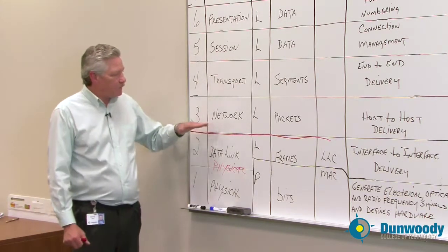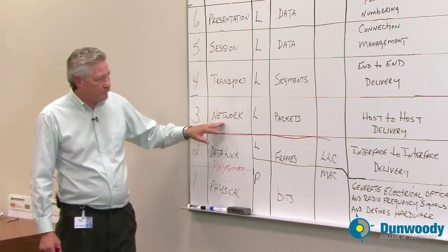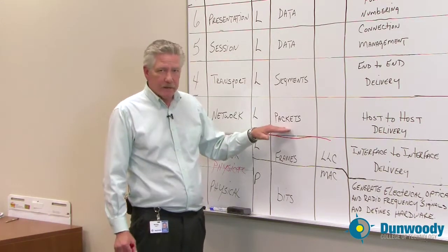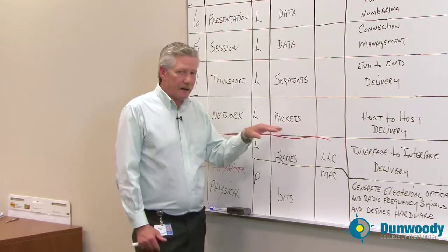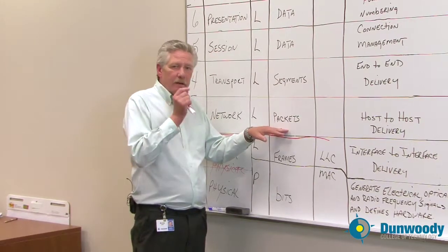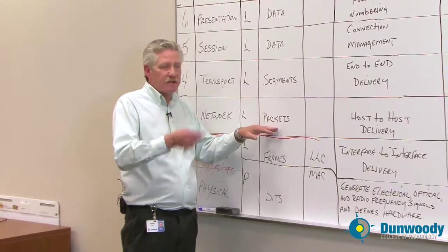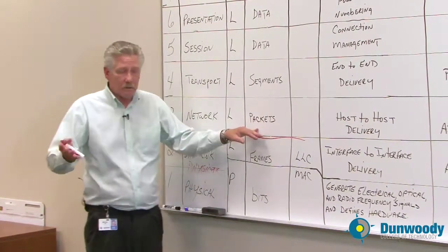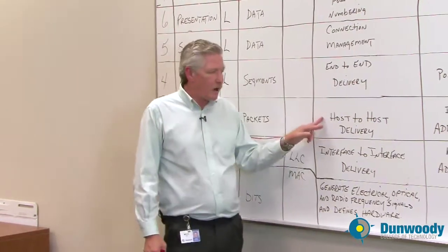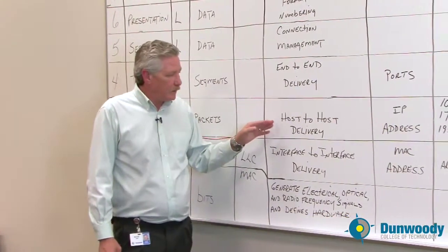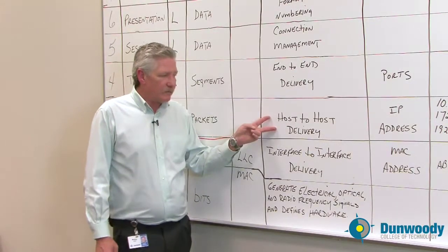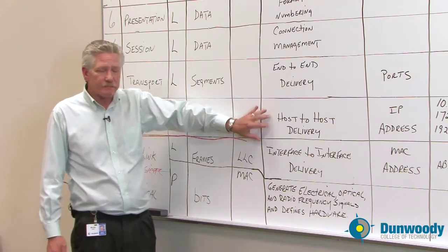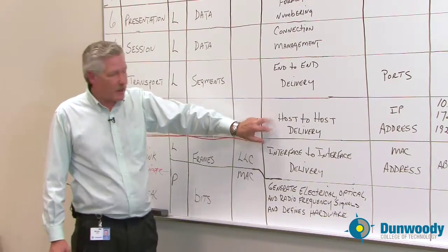Then we moved up into the network layer. Layer 3, once again, it was logical. And this is where the packets are created, because it puts on that last header, which includes the destination and source addresses in the IP format, and it could be either IP4 or IP6. And we do host-to-host delivery. Host-to-host delivery at layer 3, because now we're talking about routers, could be from router to router, as an example.